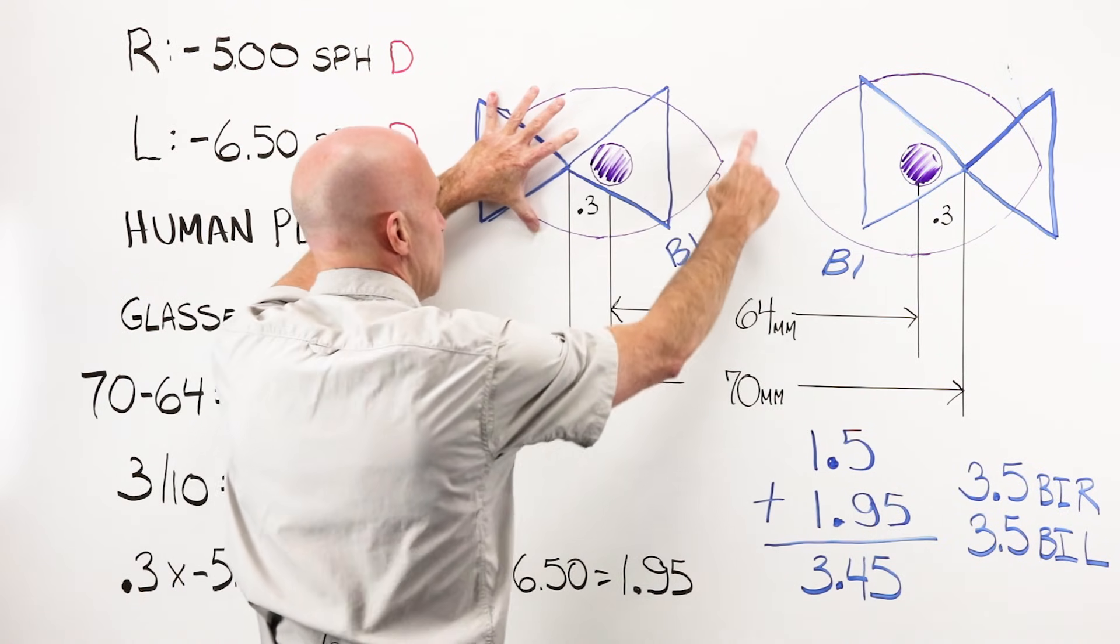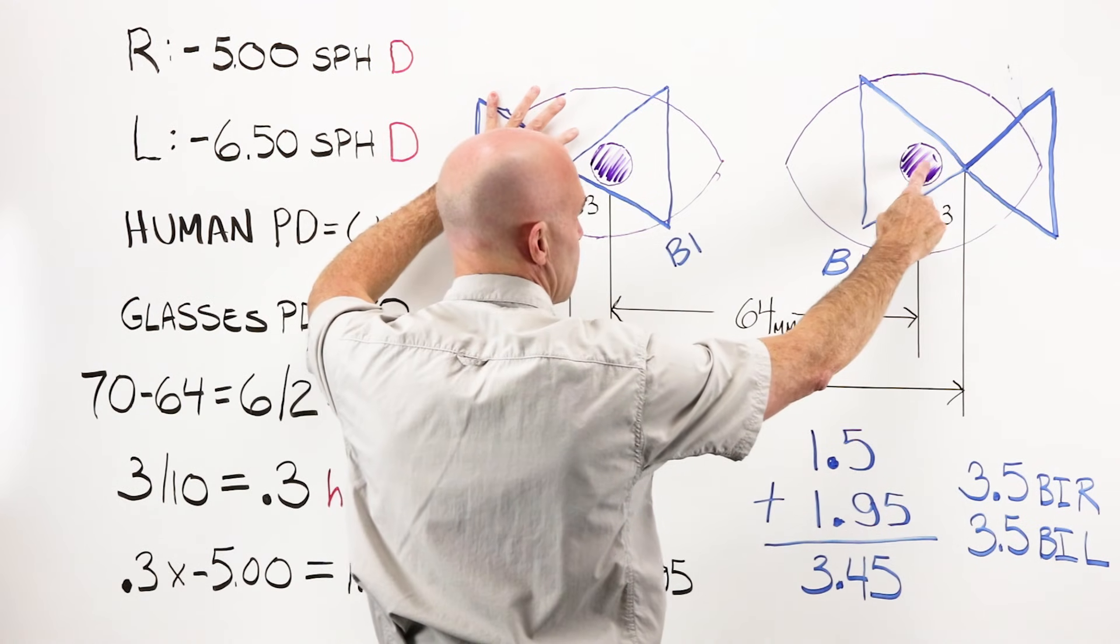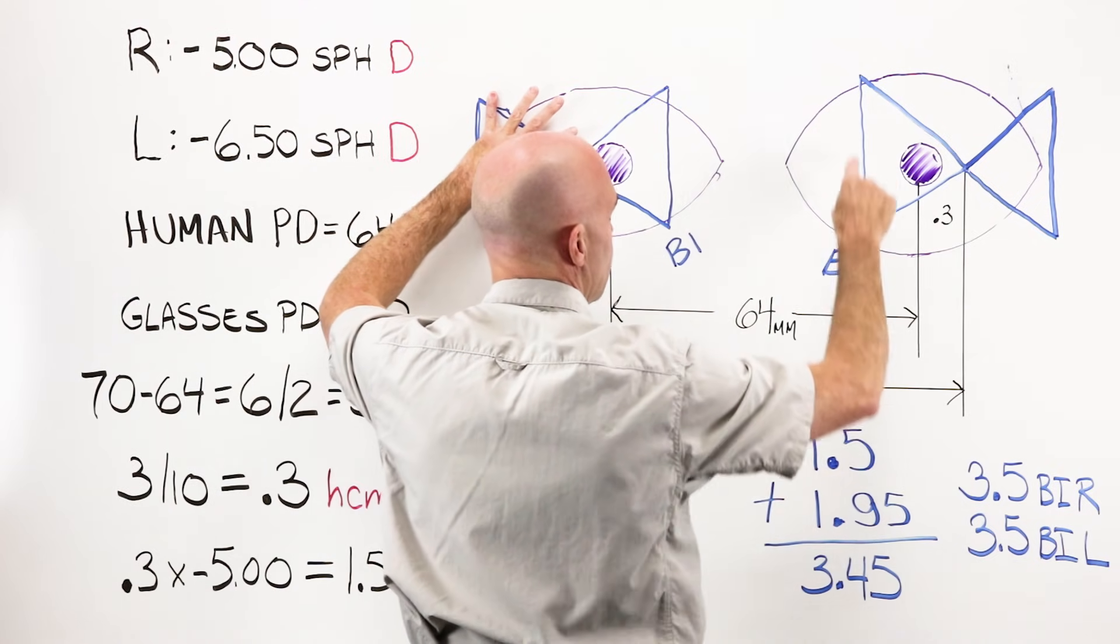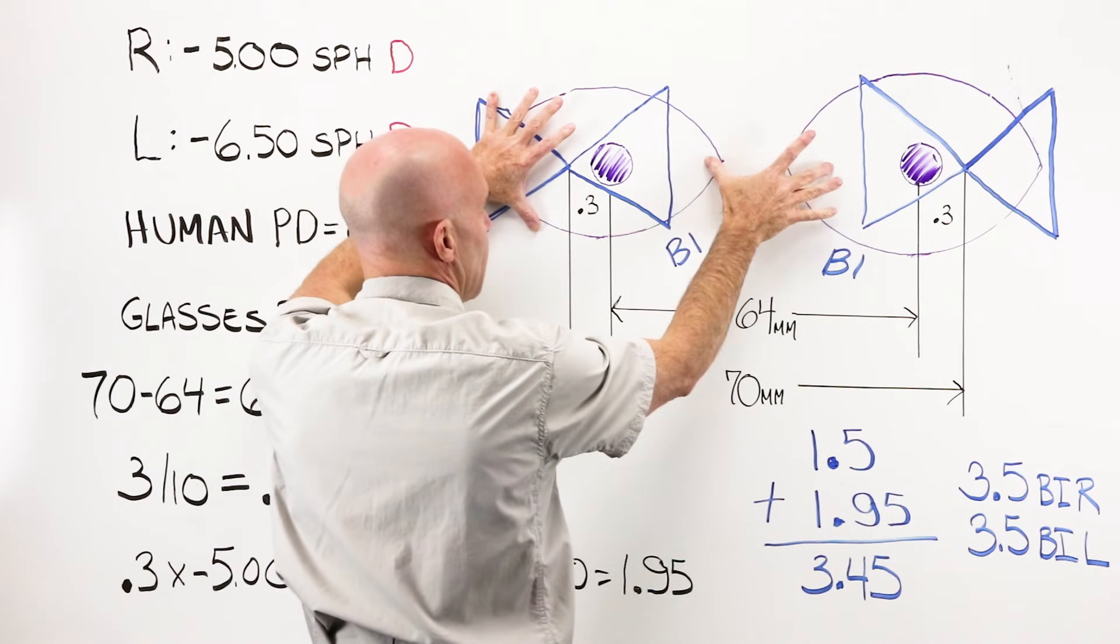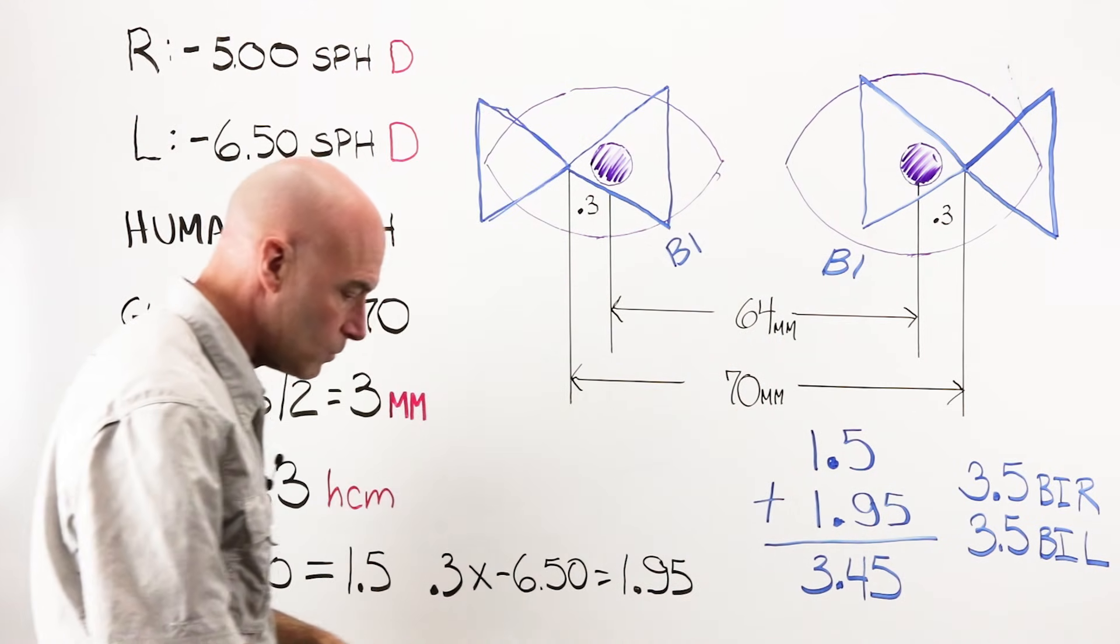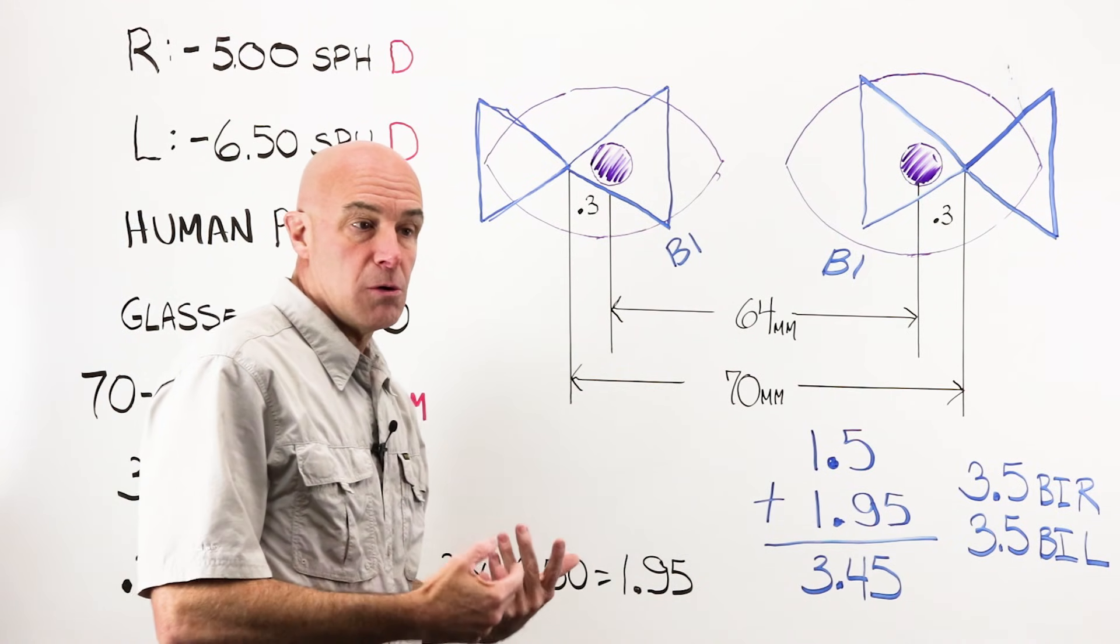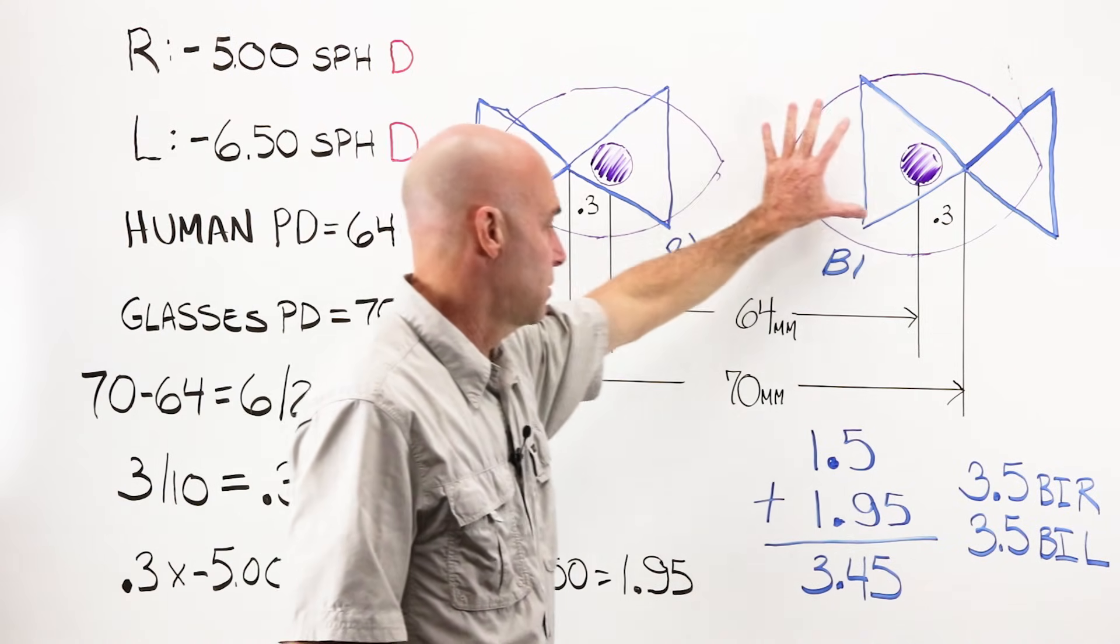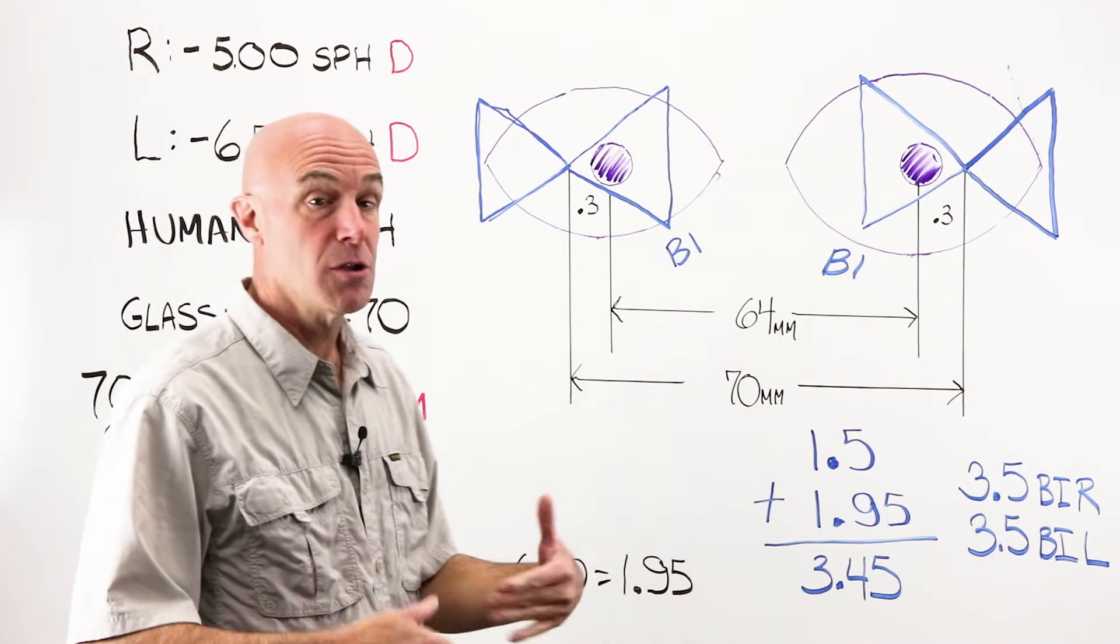What is this person looking through? Base in prism, it's related to the nose. What is this? Base in, related to the nose. They are within this triangle. They are within this triangle. In, in. Base in, base in. Again, if you look at your chart, it's going to tell you that base in, base in, prism direction, base direction, compounds or adds together. It makes things worse.